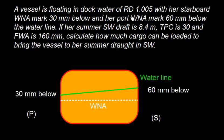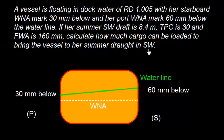A vessel is floating in dock water of RD 1.005 with her starboard WNA (Winter North Atlantic) mark 30mm below and her port WNA 60mm below the waterline. Her summer draft is 8.4 meters, TPC is 30, and fresh water allowance is 160mm. Calculate how much cargo can be loaded to bring the vessel to her summer draft in salt water.